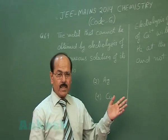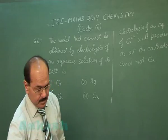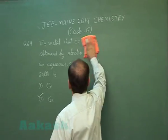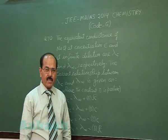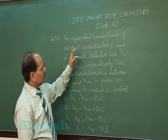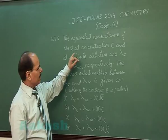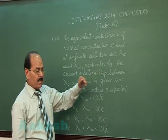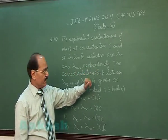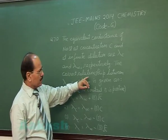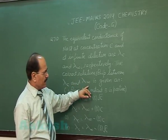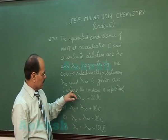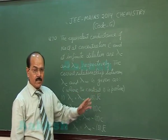Now we move on to the next question, that is question number 70. Question number 70 says that the equivalent conductance of NaCl at concentration C and at infinite dilution are lambda C and lambda infinity respectively. The correct relationship between lambda C and lambda infinity is given as four options. In these four options, the constant B has a positive value.